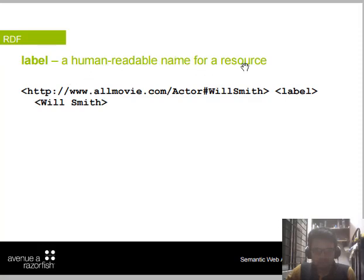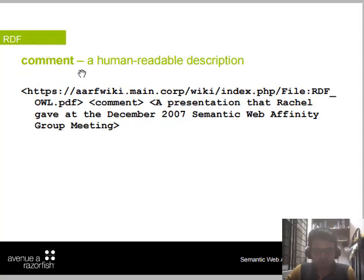RDF also includes 'rdfs:label', which is a human-readable name for a resource — for example, a URL to an actor's page with a label like 'Green Smith'. And 'rdfs:comment' is a human-readable description where you can write a comment, such as referencing a presentation from a December 2017 affinity group meeting.